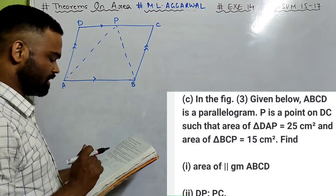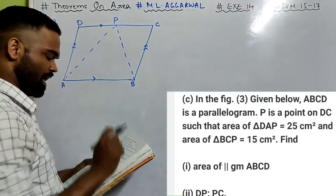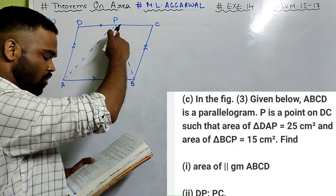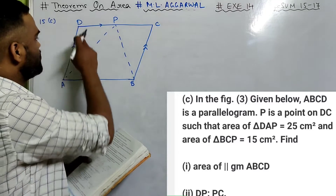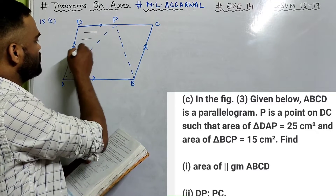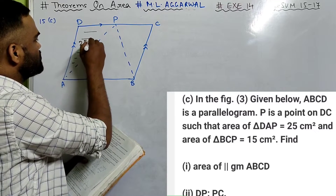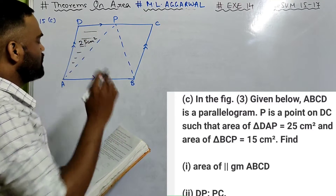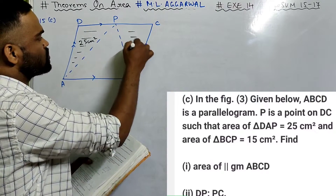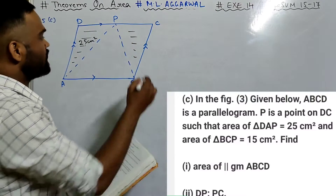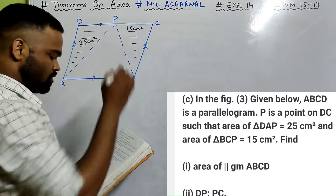Now look at 15C. In the figure, ABCD is a parallelogram. P is a point on DC such that area of triangle DAP equals 25 cm² and area of triangle BCP equals 15 cm².